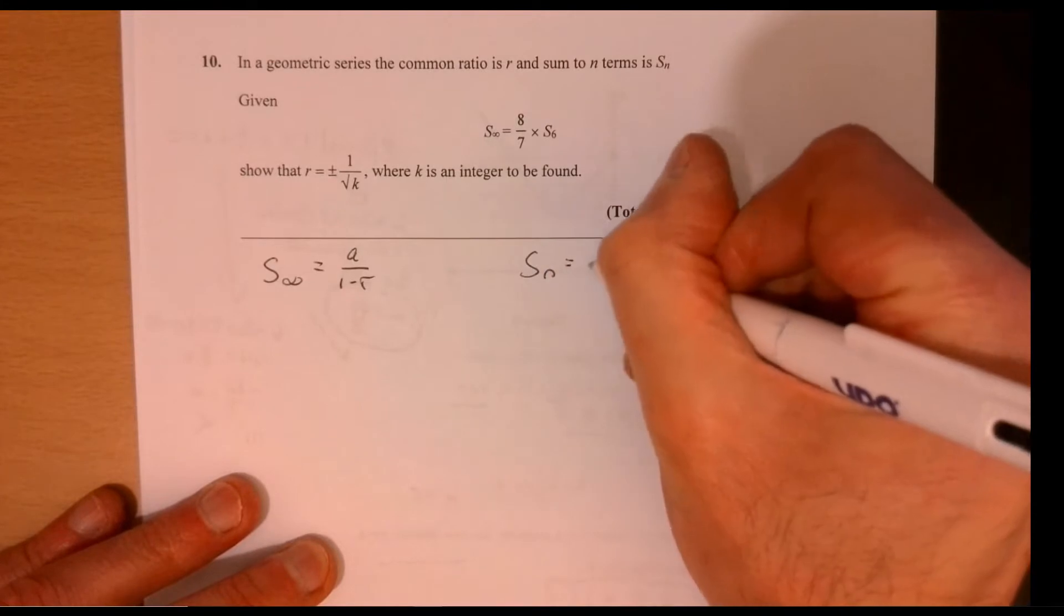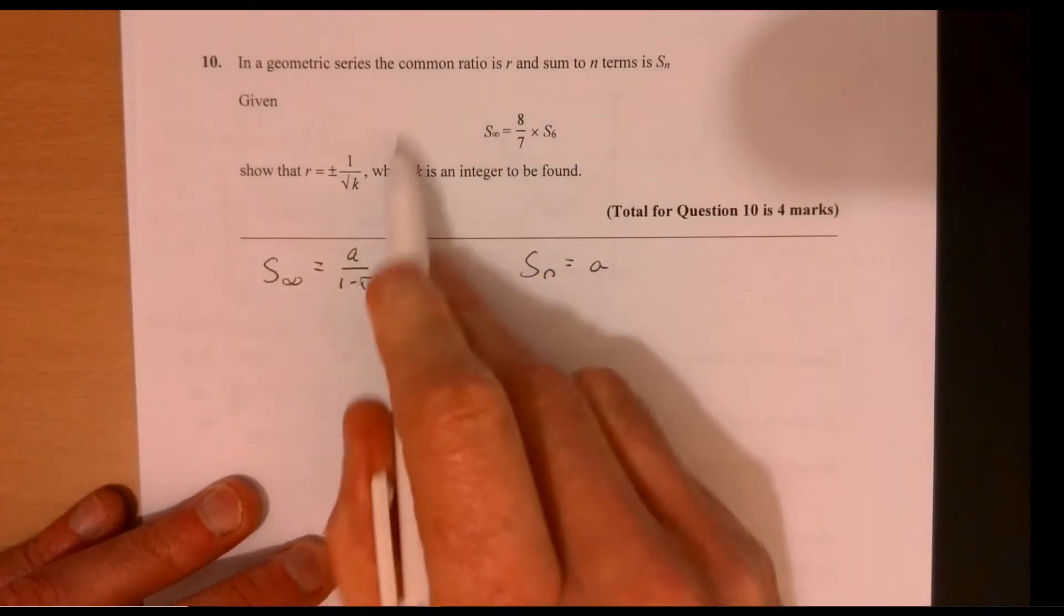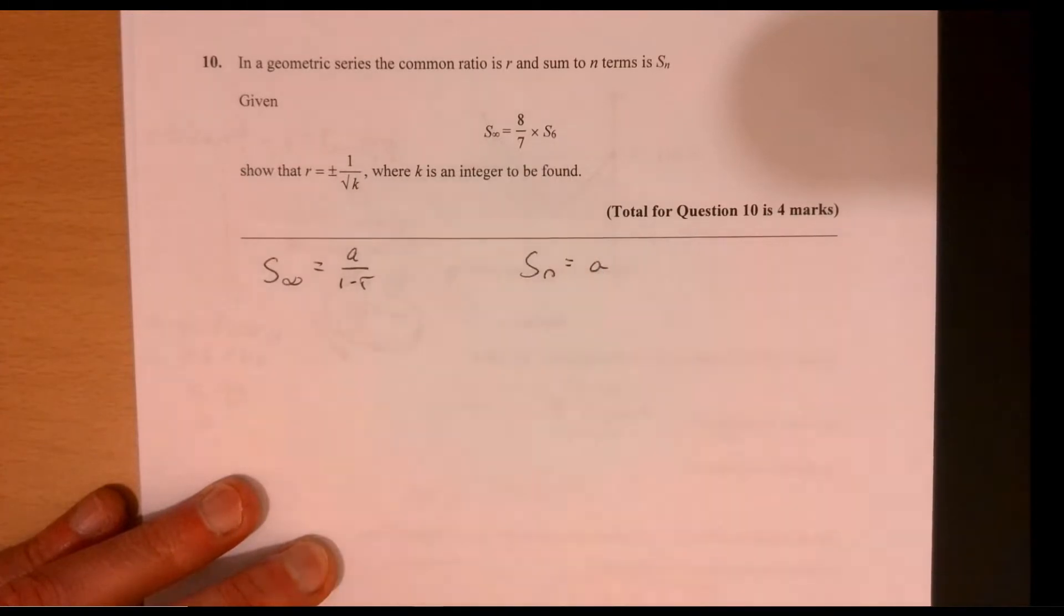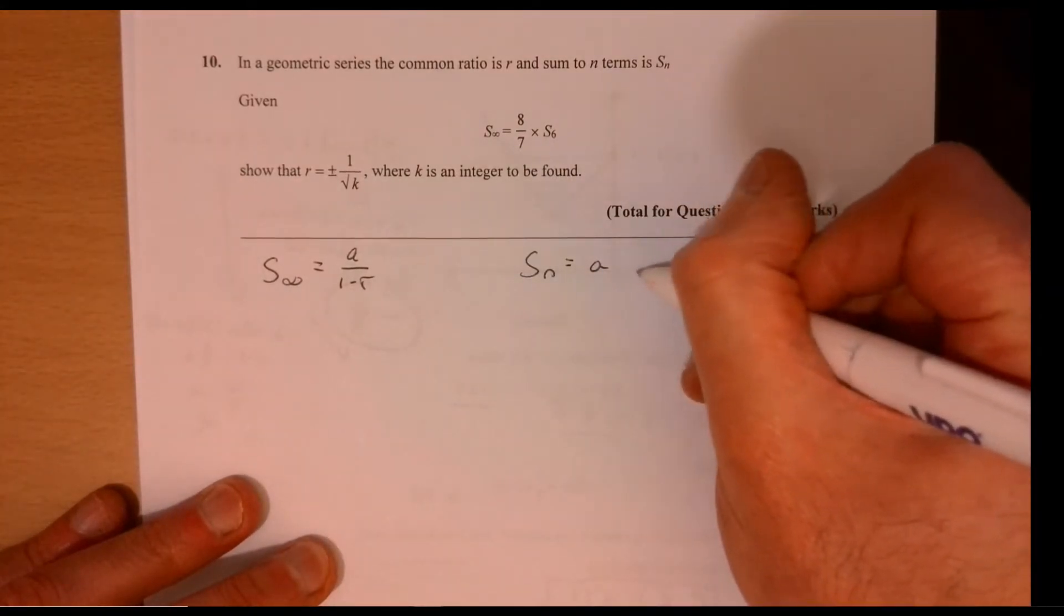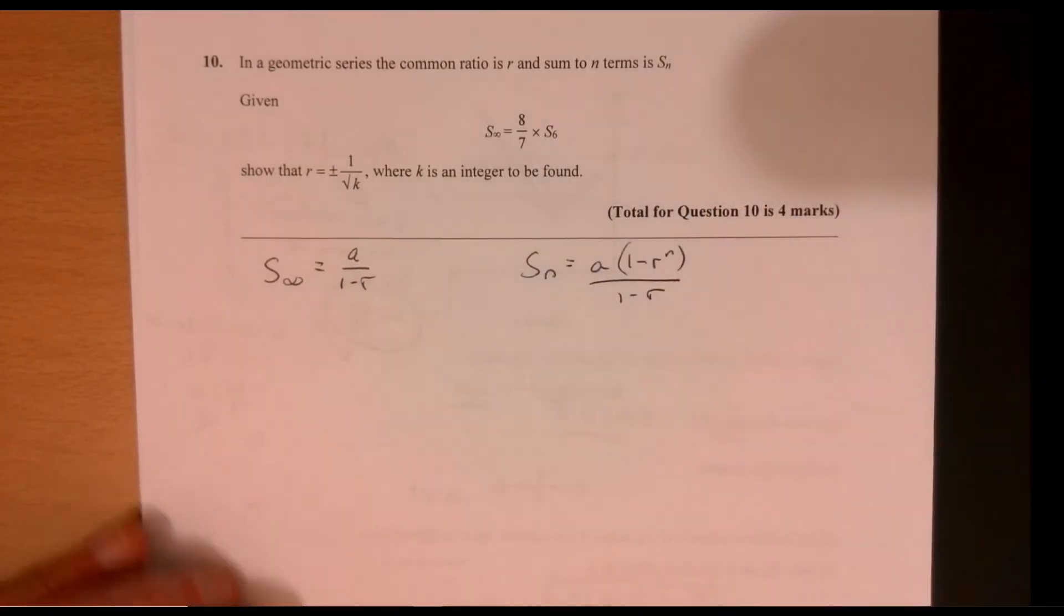And if I'm looking at a particular value, obviously we've got S6, then it's 1 minus R to the n over 1 minus R. Right, okay.